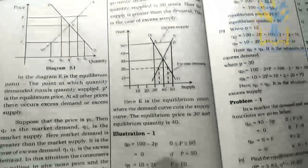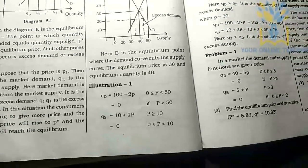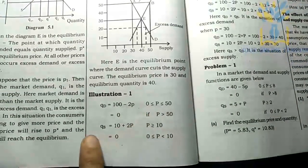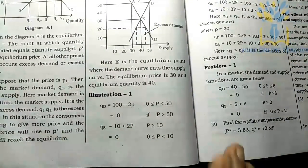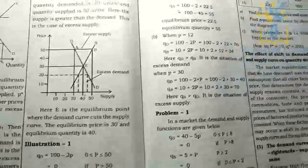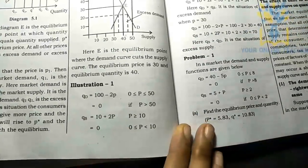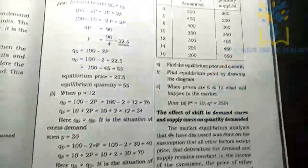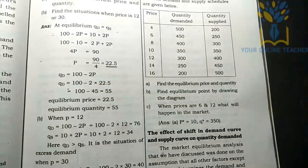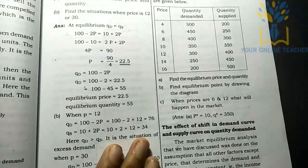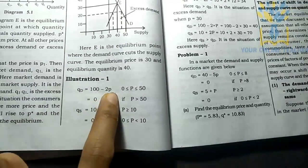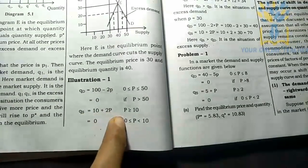Now I will show you an illustration. The equilibrium price is found using the demand and supply equations. The demand equation is Q = 100 - 2P and the supply equation is Q = 10 + 2P.